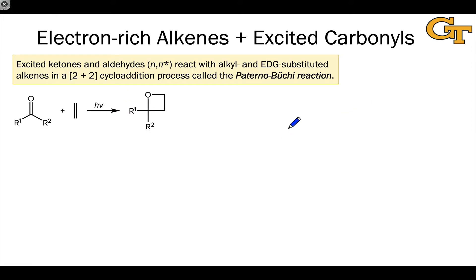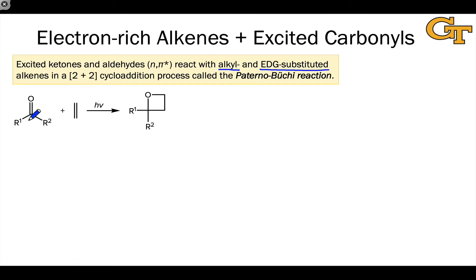We're going to start with additions of electron-rich alkenes with excited states of carbonyls. By electron-rich we mean an alkene that is either alkyl-substituted or substituted with an electron-donating group such as an alkoxy or amino group. These substrates containing carbon-carbon pi bonds can engage with the carbon-oxygen pi bond of a ketone or aldehyde in a 2+2 cycloaddition process to form a four-membered ring.